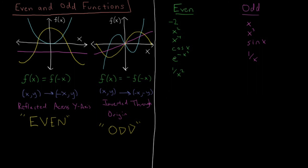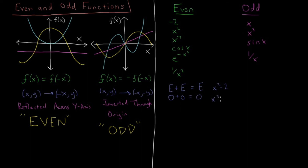So why is this important, and what are some general properties? Let's look at what happens when we add or multiply even and odd functions. Even plus even gives an even function — for example, x² - 2 is still even. Odd plus odd is still odd — for example, x³ + x still obeys the odd relationship if you substitute it in.